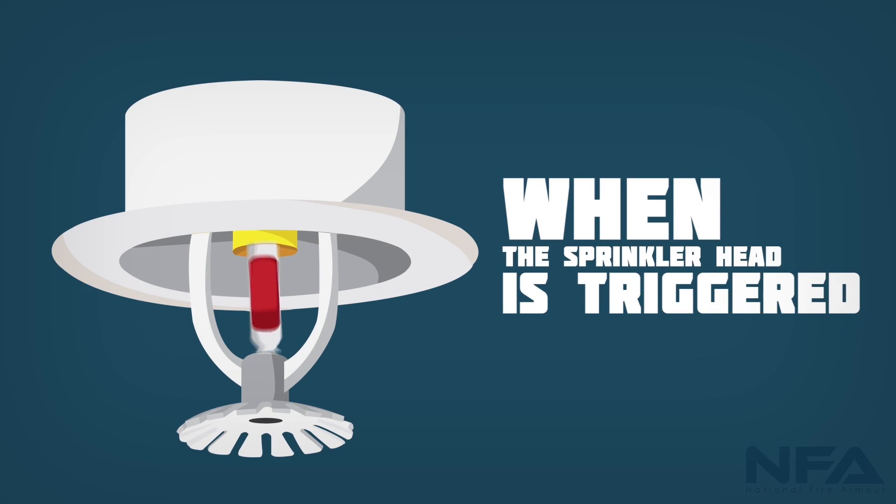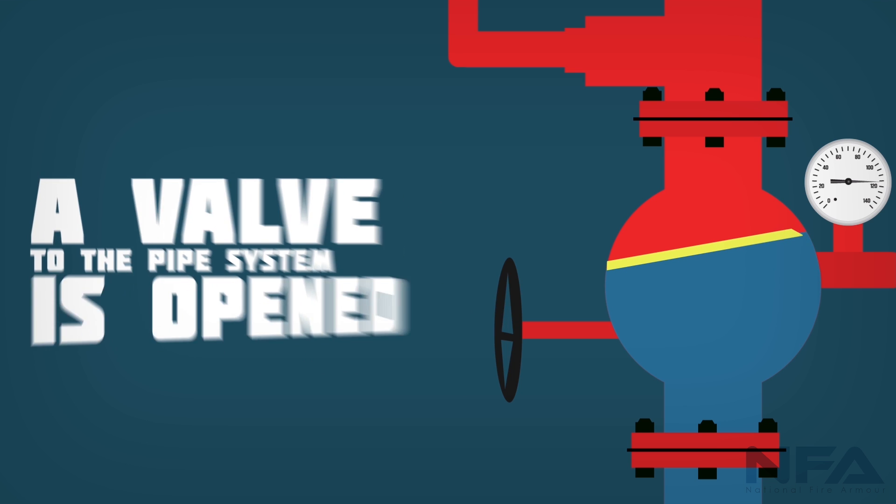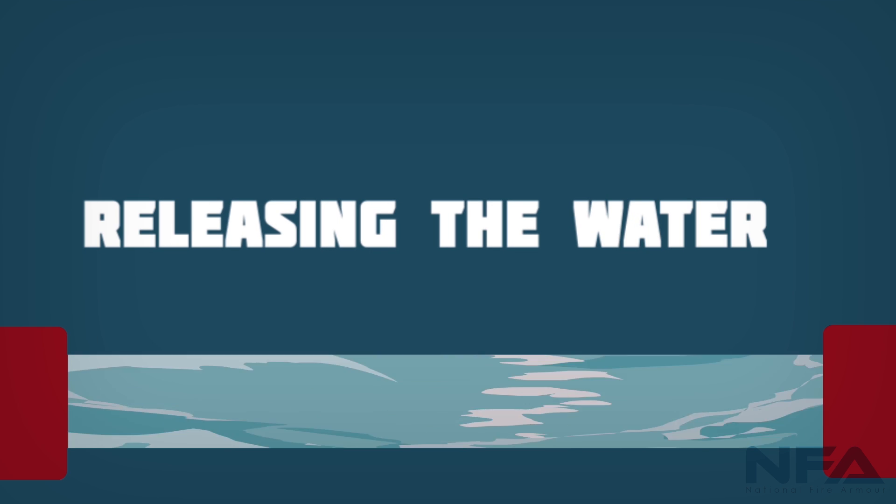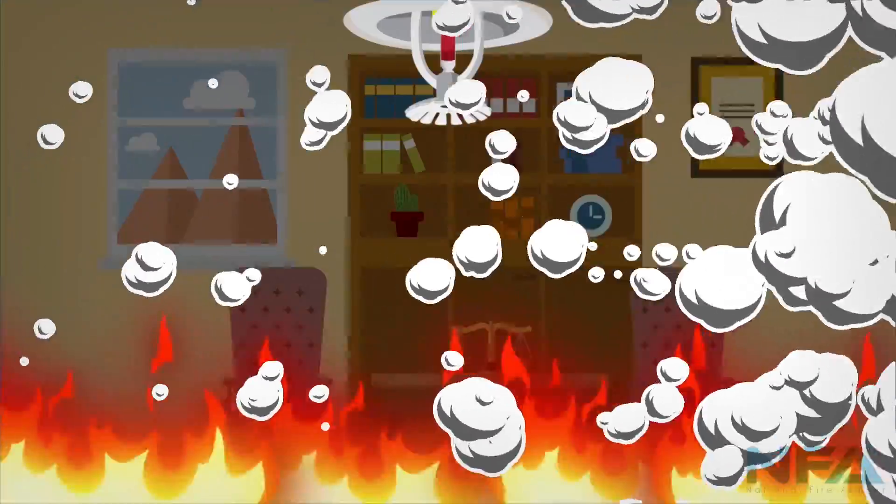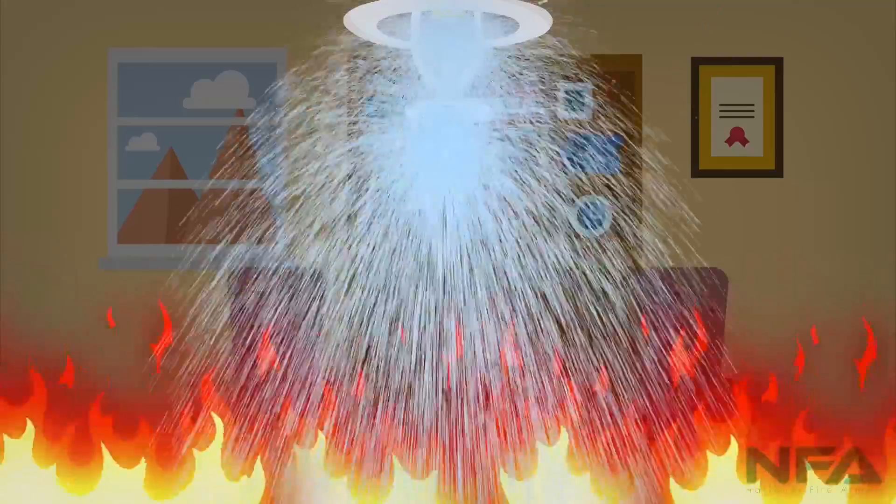When the sprinkler head is triggered, a valve to the pipe system is opened, releasing the water that is kept under pressure from the pipes. The water is quickly pushed out of the pipes through the sprinkler head.